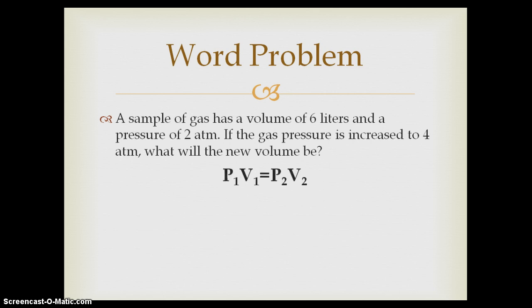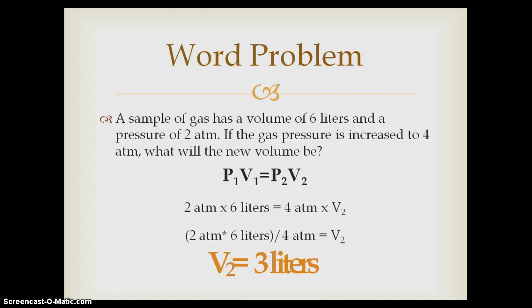Now plugging in our values, we have two ATM times six liters equals four ATM times volume two. Isolating our variable, then solving our arithmetic, we see that volume two equals three liters.